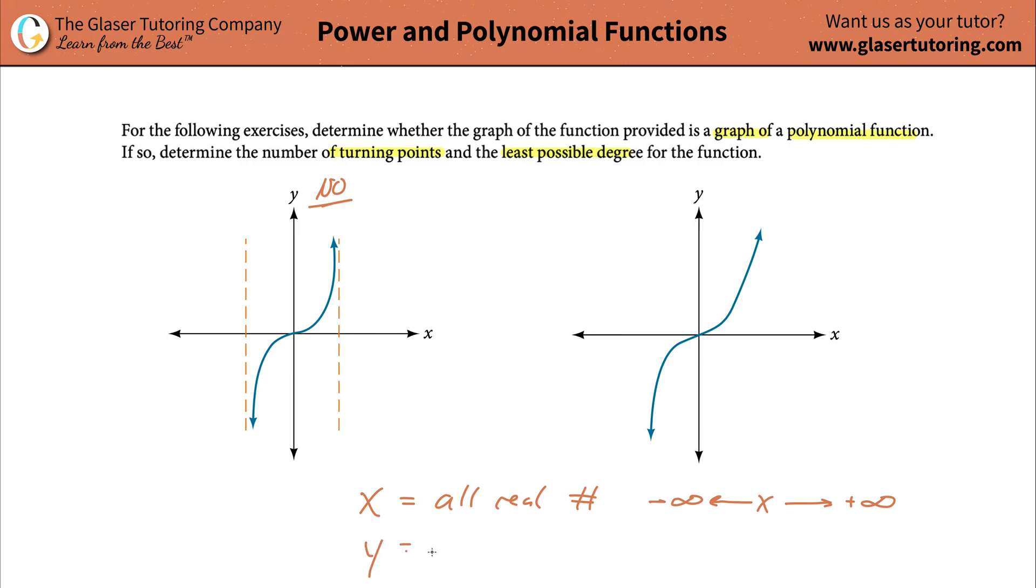Now for the y's. The left side and the right side of the graph has to go out. So this is y specifically. The left side and the right side must go to infinity. Now I don't care if it's positive or negative. Could be positive or negative.